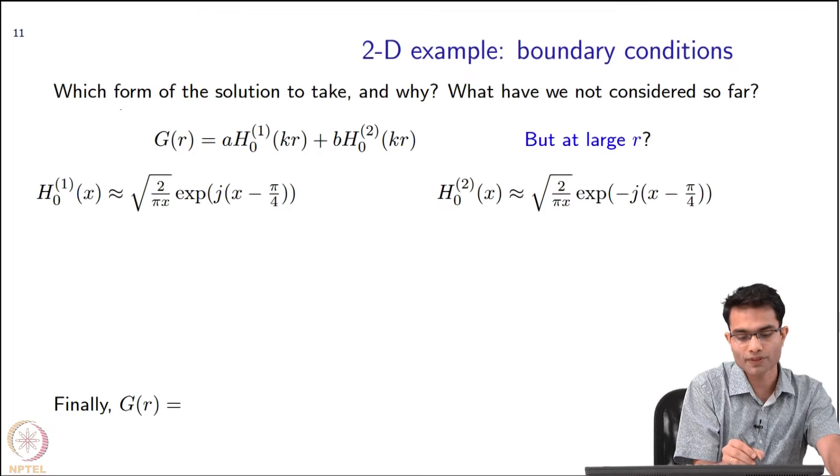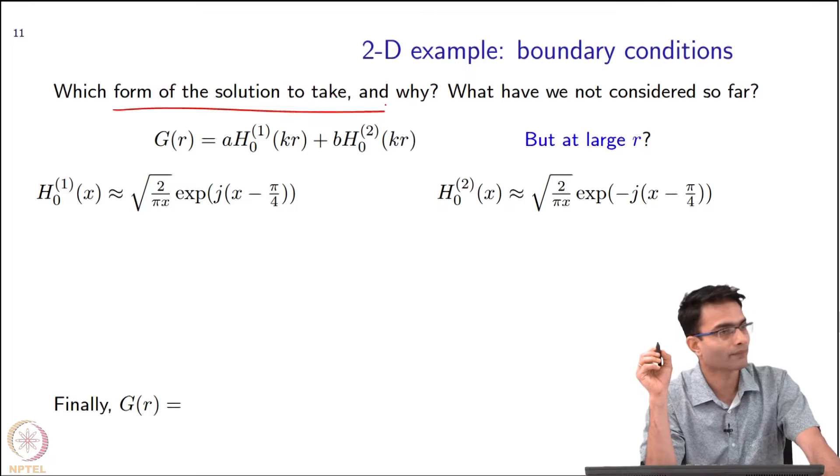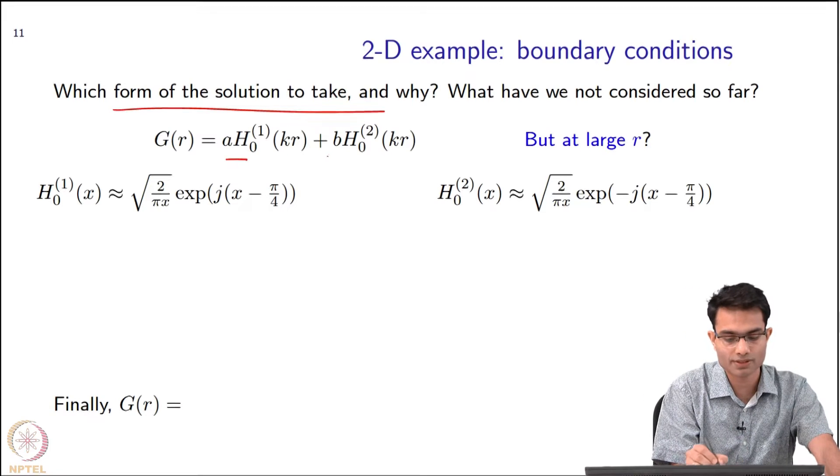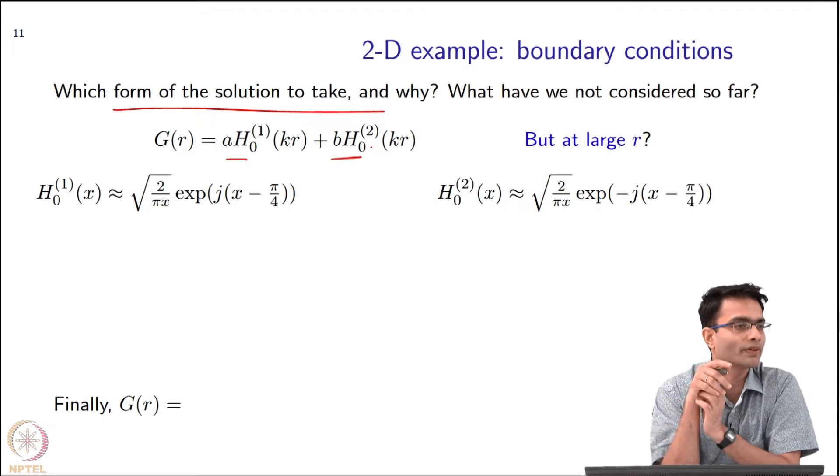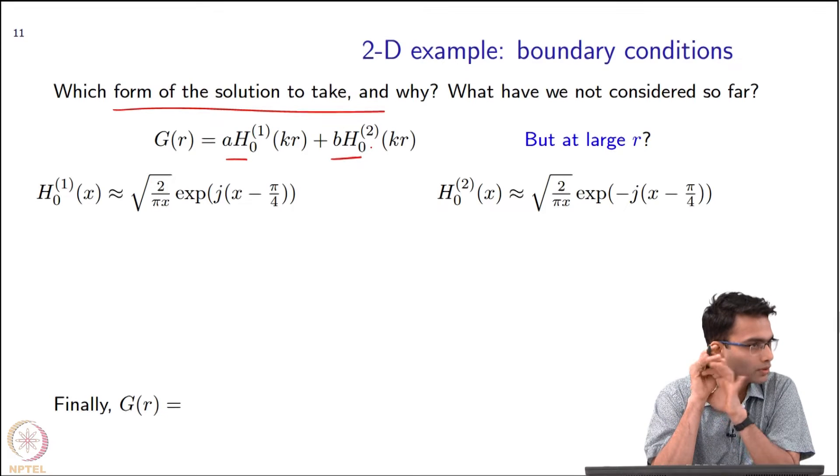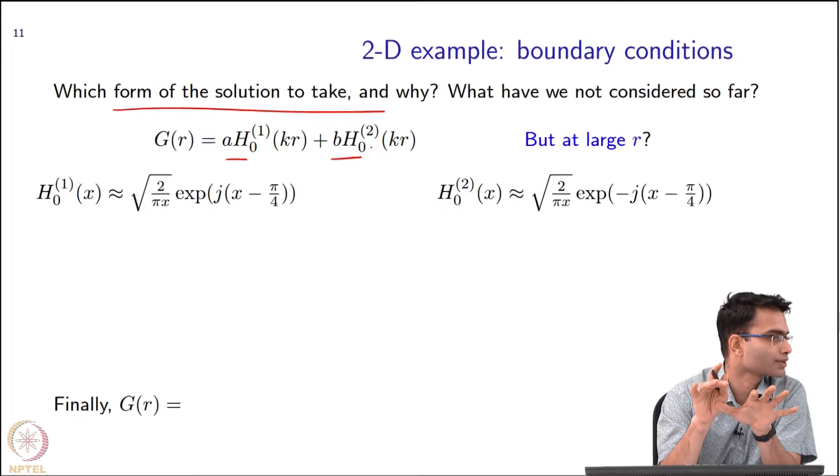Here comes the question of which form of the solution to take and why. I wrote it as a times h₀⁽¹⁾ plus b times h₀⁽²⁾, and so far we have not really figured out or put to use the idea of boundary conditions at all.